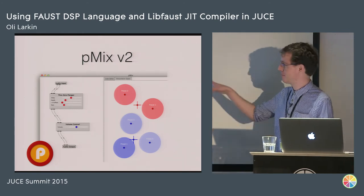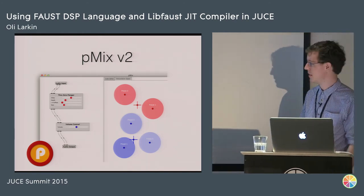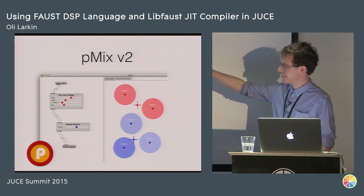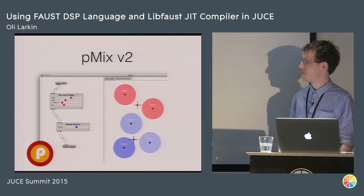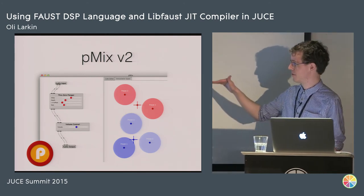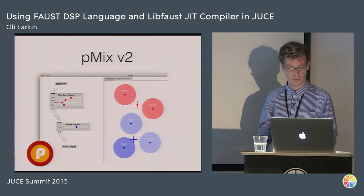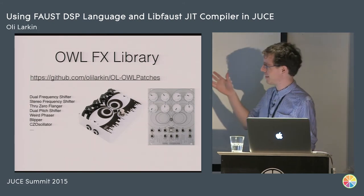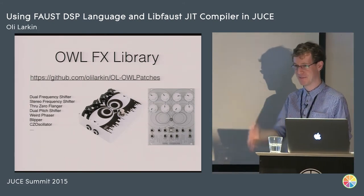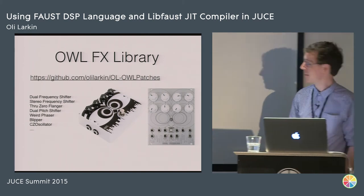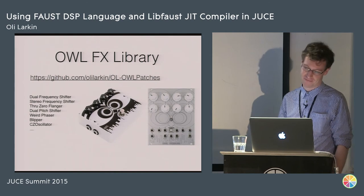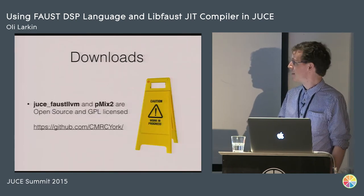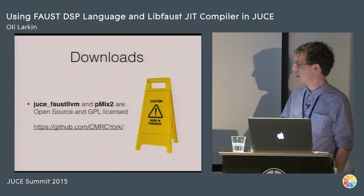The next thing is PMix version 2 — what I showed you earlier. The original was in Max MSP and it's yet another project based on the JUCE demo host. You can make nodes on the audio graph as JIT compiled Faust code, then select parameters to interpolate in the graphical window. Lastly, I've been using Faust to make patches for the OWL pedal — there's an architecture file to go directly from Faust to the OWL pedal. Those things are open source and GPL licensed, and you can find them on the GitHub page.